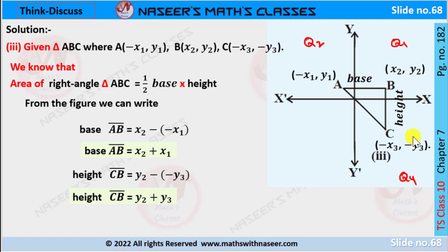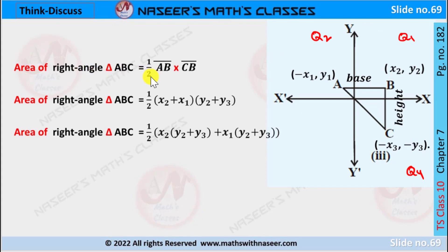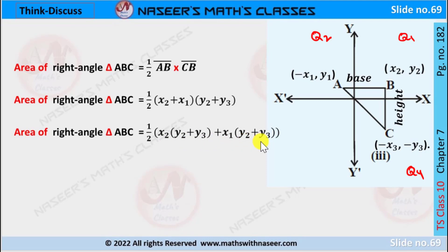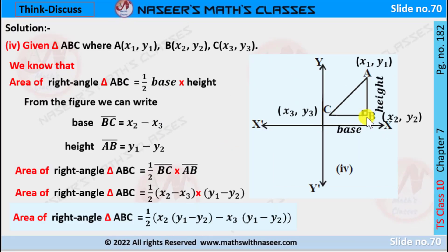The height CB equals the difference between y2 and (−y3); since minus times minus is plus, height CB equals y2 plus y3. The area of triangle ABC equals half times AB times CB. Substituting these values gives half times (x2 plus x1) times (y2 plus y3). By the distributive law, we can expand this as x2(y2 + y3) plus x1(y2 + y3). Therefore, the area equals one-half times [x2(y2 + y3) + x1(y2 + y3)].